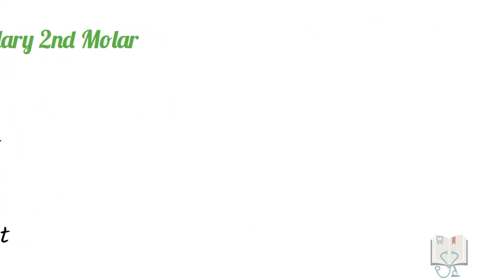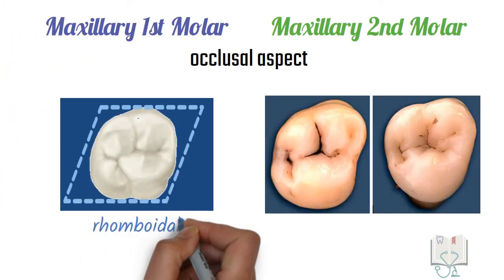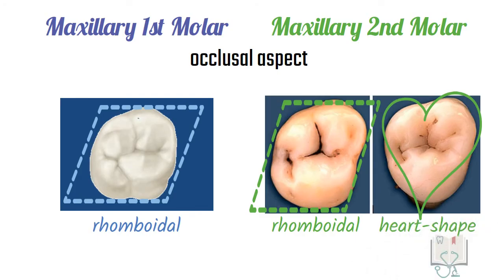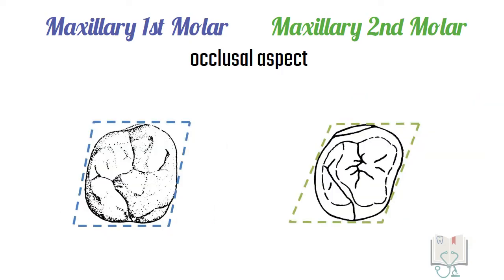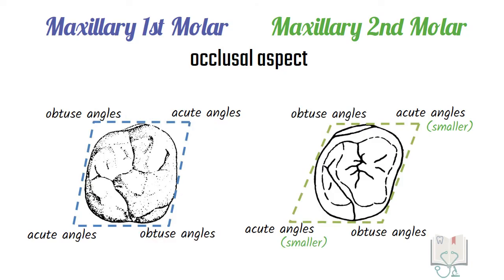Finally, the occlusal aspect: the outline form of the crown is rhomboidal in the first molar, but can be rhomboidal or heart-shaped in the second molar, depending on the size of the distolingual cusp. If we compare only the rhomboidal outline form, the acute angles in the second molar are more acute or smaller, whereas the obtuse angles are more obtuse or larger than in the first molar.